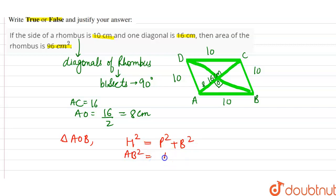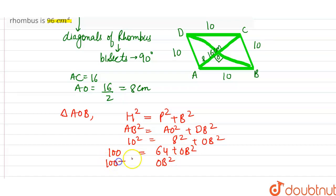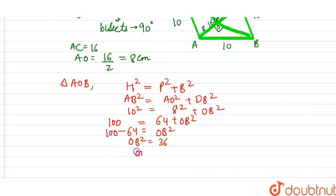So 10² = 8² + OB². That gives us 100 = 64 + OB². Therefore, OB² = 100 − 64 = 36.